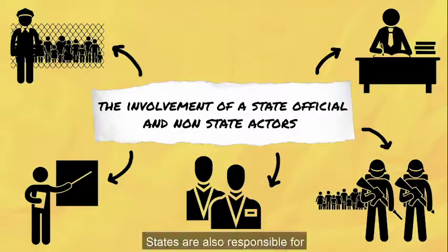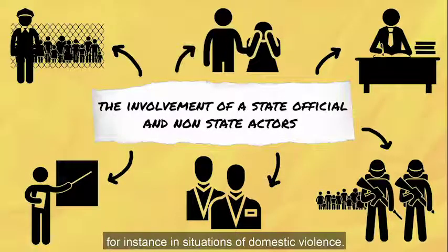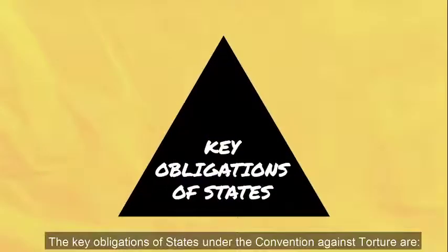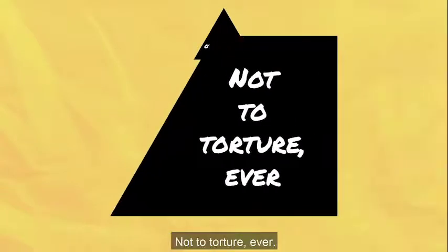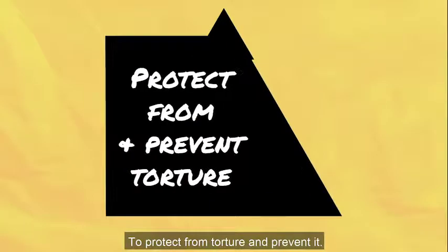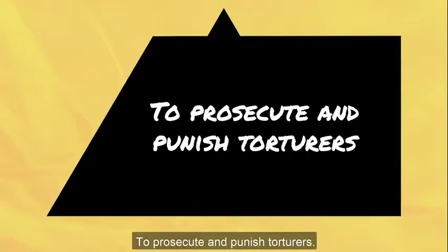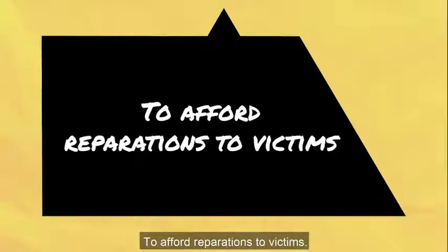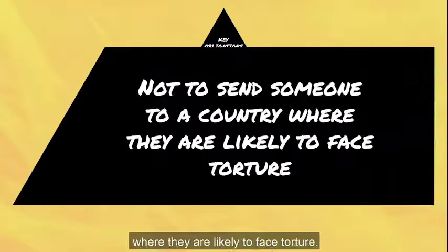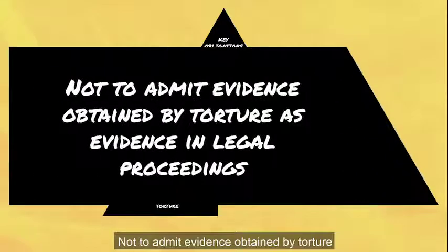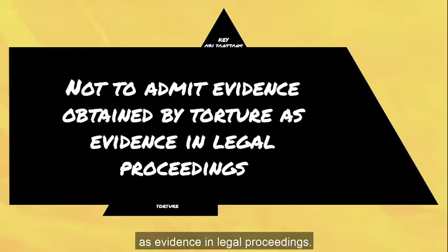States are also responsible for tolerating acts of private actors, for instance in situations of domestic violence. The key obligations of states under the Convention Against Torture are: not to torture ever; to protect from torture and prevent it; to prosecute and punish torturers; to afford reparations to victims; not to send someone to a country where they are likely to face torture; and not to admit evidence obtained by torture in legal proceedings.